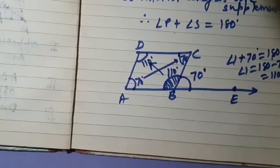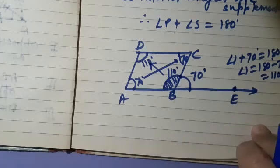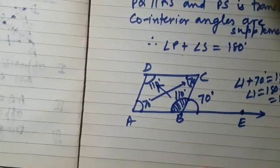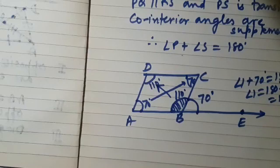In the next class, we will be solving questions using these properties. Prepare the properties of trapezium and parallelogram. We will also be discussing other special quadrilaterals — specifically parallelograms like rectangle, square, and rhombus.